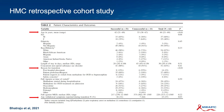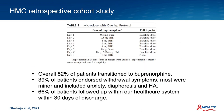Whether or not patients had withdrawal during the process also mattered — folks who had any withdrawal were more likely to be unsuccessful. The protocol they used is pretty similar to a lot of outpatient protocols in other case series. Overall, 82% of patients in this study successfully transitioned to buprenorphine. About 40% endorsed withdrawal symptoms, most of which were minor and included anxiety, diaphoresis, and headache. Two-thirds of patients followed up within a month for continued treatment within the health system at discharge.